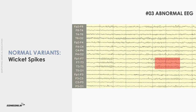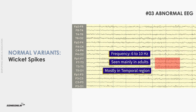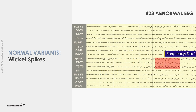Wicket spikes are frequently encountered benign variants with arch-like morphology, often seen in clusters. They have a frequency of 6 to 10 Hz and amplitude ranging from 60 to 100 microvolts. Wicket spikes are mainly seen in adults during drowsiness and light sleep, most frequently in the temporal regions, occurring unilaterally or bilaterally in an independent manner.